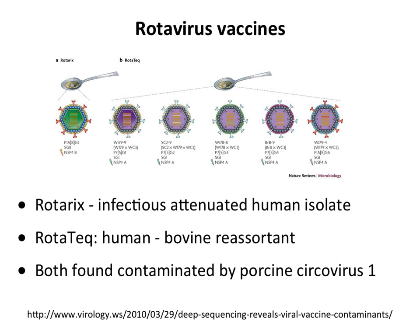About two years ago, someone deep-sequenced a bunch of virus vaccines and found contaminating viruses. In particular, both rotavirus vaccines were contaminated by a porcine circovirus — small DNA-containing icosahedral viruses with single-stranded DNA genomes. For a while these vaccines were suspended, but data eventually showed the porcine circovirus did nothing to people, so they're now selling them again. The porcine circovirus came from the trypsin used to split the cells in vaccine production — trypsin comes from porcine pancreas, contains virus, and there's nothing you can do about it. All our blood has porcine circovirus — when you eat pork you have it in your intestine, but it doesn't seem to do anything to us.